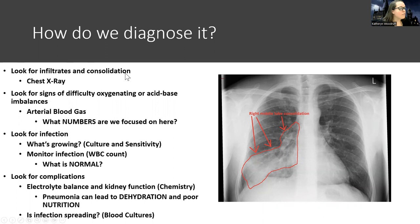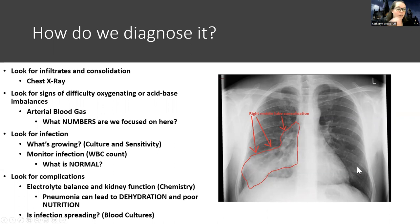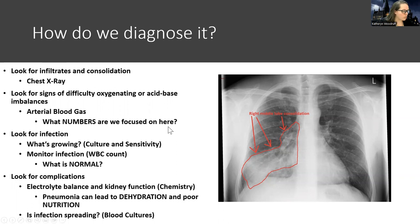How do we diagnose pneumonia? We look for infiltrates and consolidation on a chest X-ray — it kind of looks patchy or hazy in those areas, which is usually a sign of infection or fluid. Normally in an X-ray you should see lots of black, because black means air is moving. Since this is an oxygen problem, we look for problems with oxygenation or acid-base imbalance, and we may get an ABG. Since this is primarily an oxygen problem, we focus on PaO2, and we also want to check CO2 to see if they're ventilating.